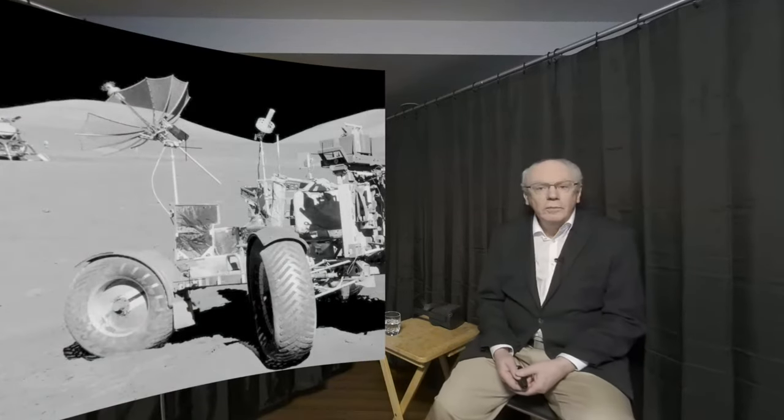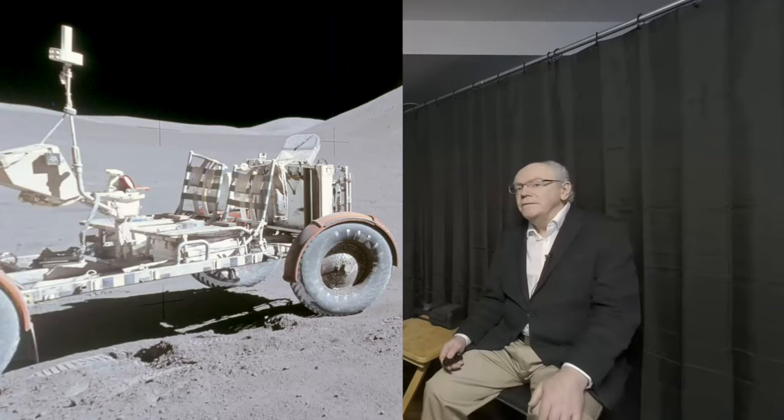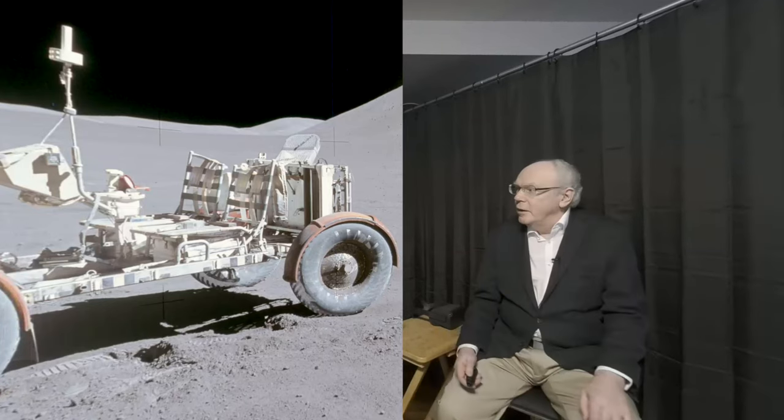This is the lunar rover of Apollo 17. The rover was used to carry equipment and samples. This is from Apollo 15 with the rover in the final parking place. The little bit of colour on the rover contrasts the grey lunar landscape.